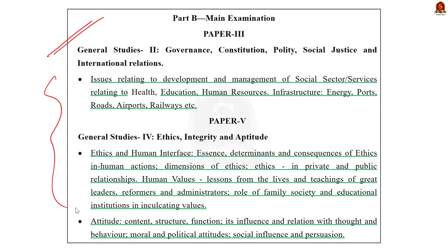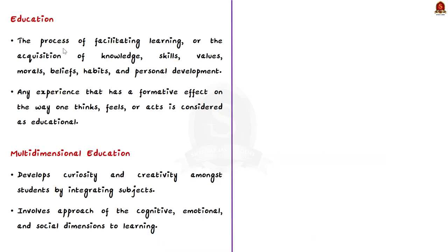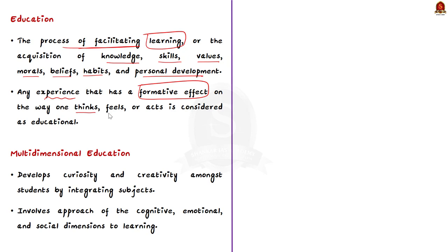First, what is education? Education is a process of facilitating learning or the acquisition of knowledge, skills, values, morals, beliefs, habits and personal development. So this definition of education itself is multi-dimensional. Also remember, any experience that has a formative effect on the way one thinks, feels or acts is considered as education. Now let us see the core meaning of multi-dimensional education.